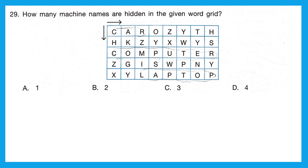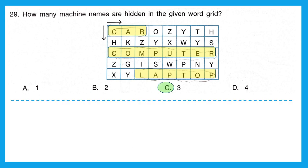Question 29: how many machine names are hidden in the given word grid? Let's search left to right and top to bottom. The first one is C-A-R, car. The second is C-O-M-P-U-T-E-R, computer. The last one is L-A-P-T-O-P, laptop. We have three machine names. Correct option is C, 3.